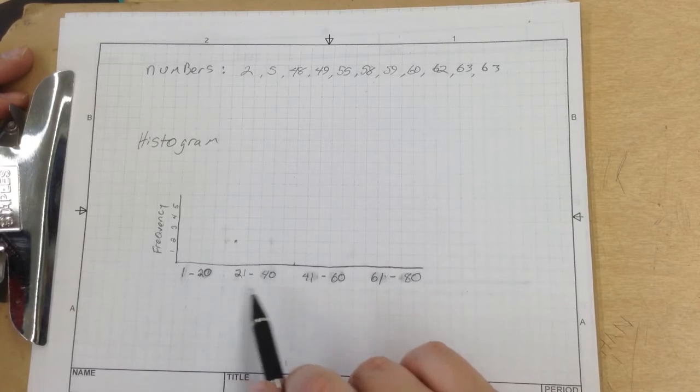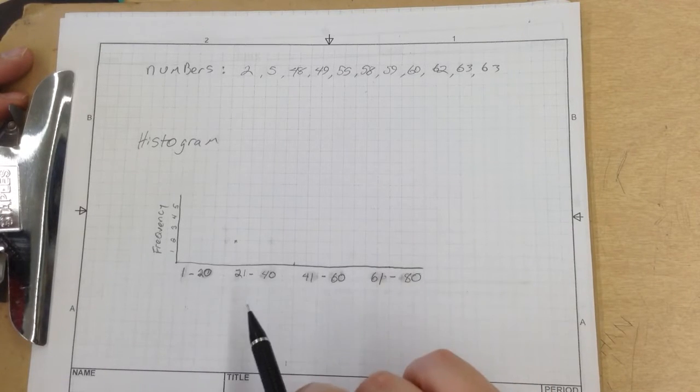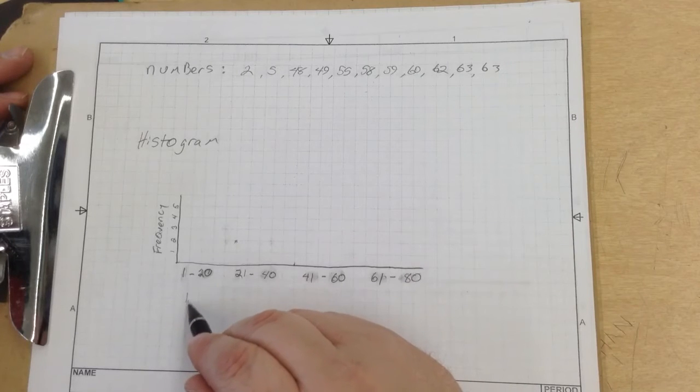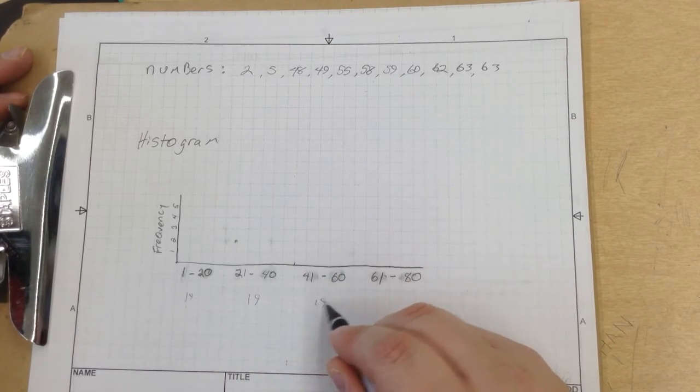Now, these down here are arbitrary numbers. It doesn't matter how you distribute these as long as they're equal. You can see that each one of my areas right here are 19 units.